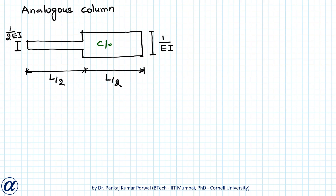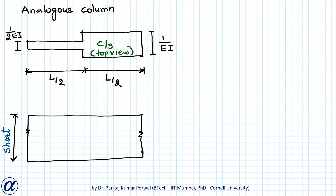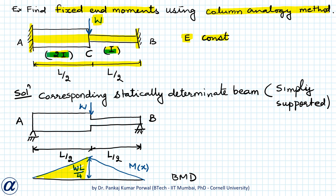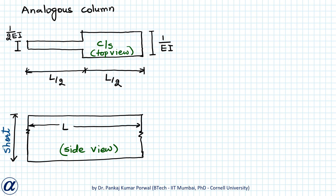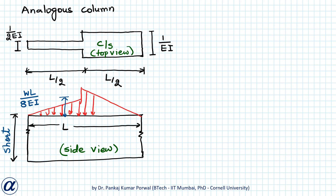This is the cross-section (top view) of the analogous column. On top of this analogous column we apply M/EI loading. For the first half, since the second moment of area is 2I, the bending moment diagram is divided by 2EI, giving a height of WL/(8EI) since M at that point is WL/4 divided by 2EI. For the second half, the triangular load has maximum value WL/(4EI).